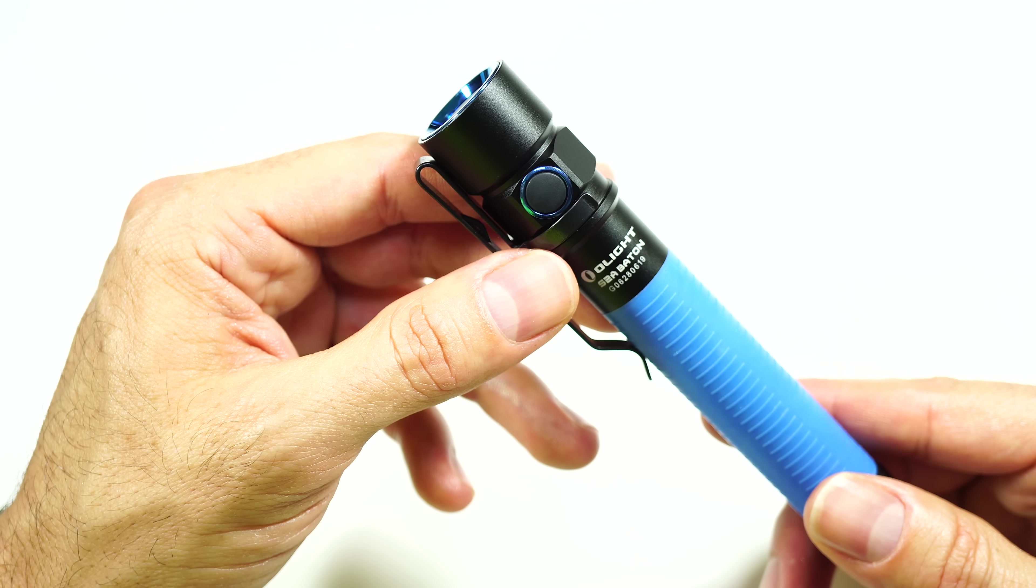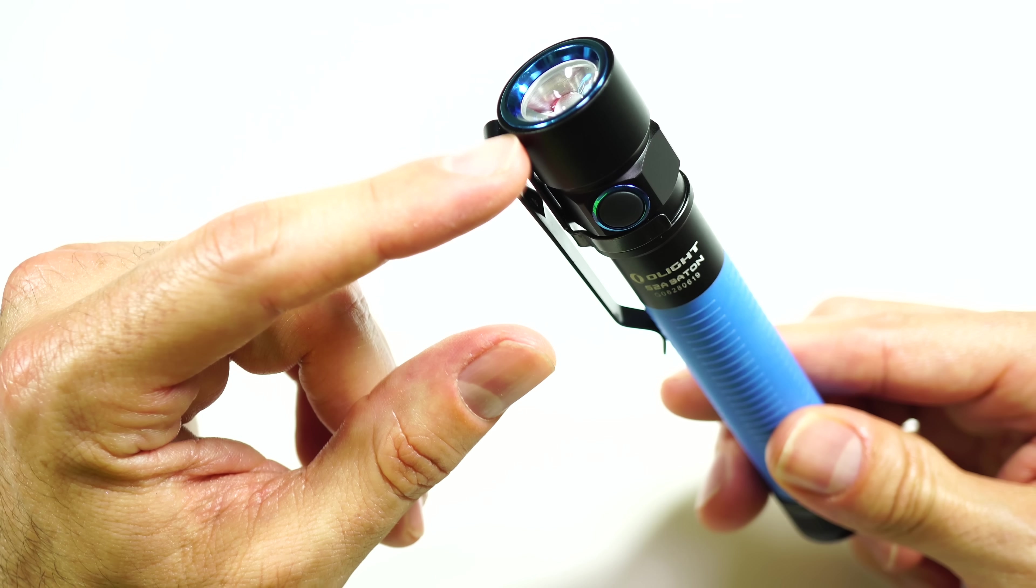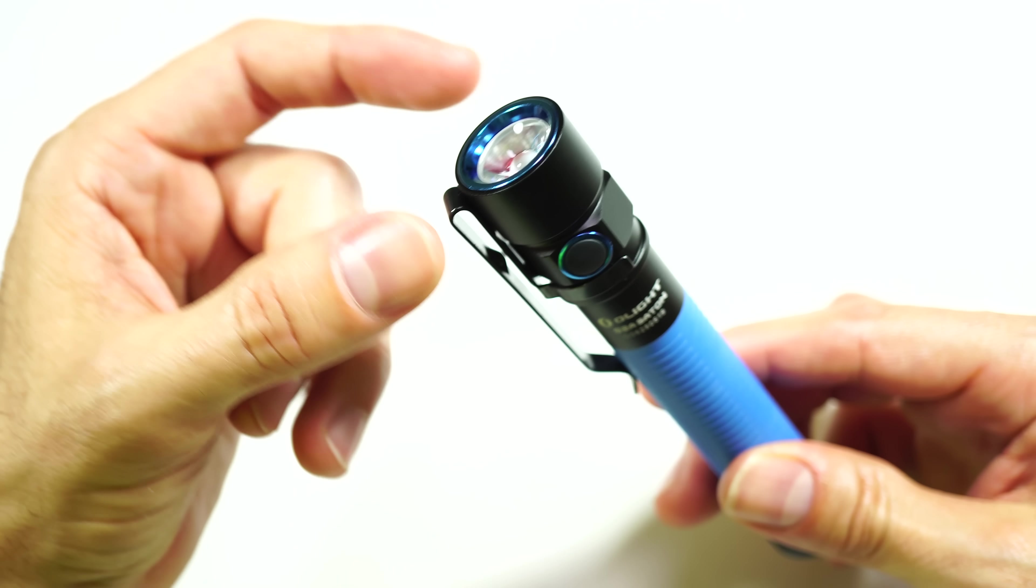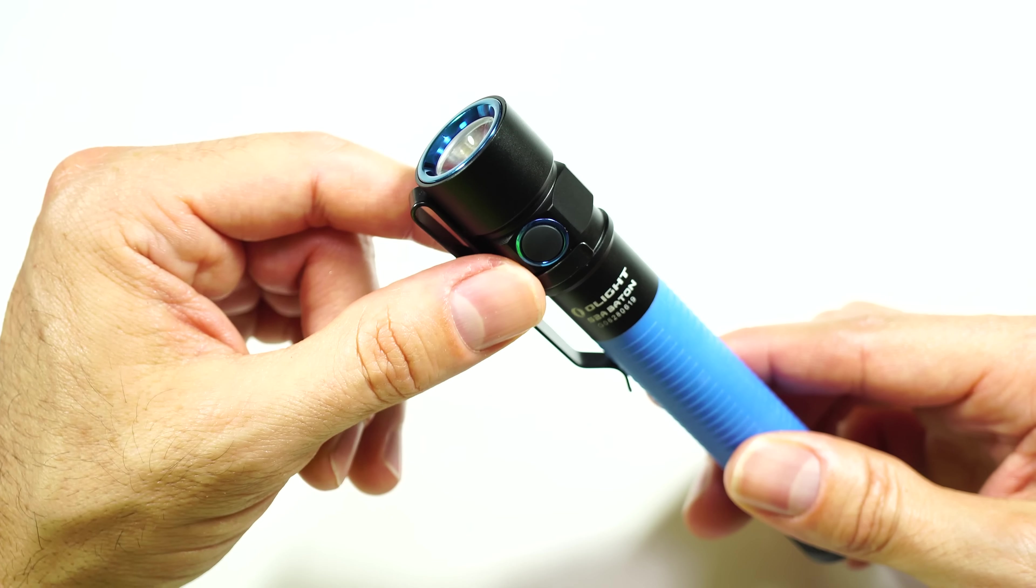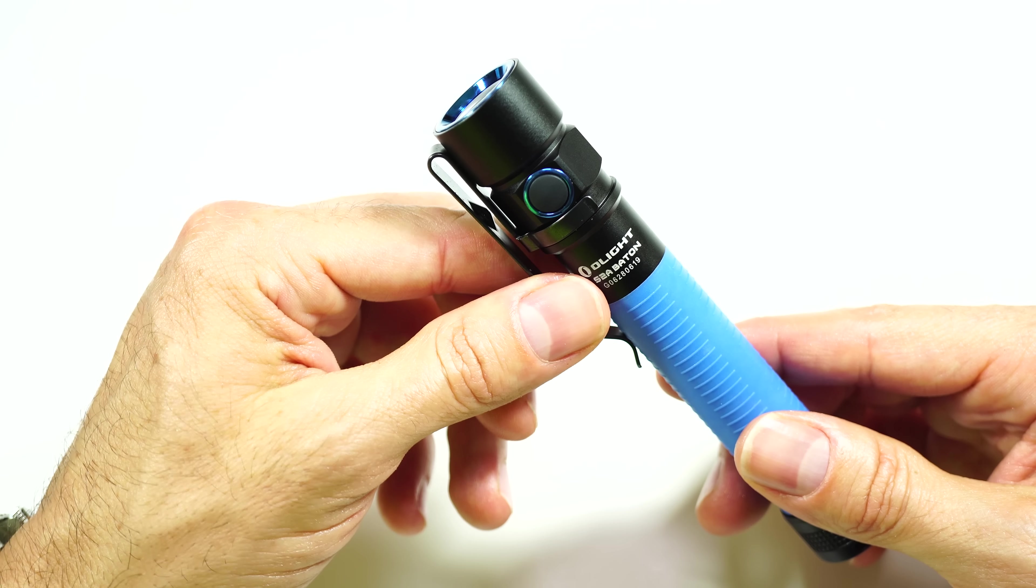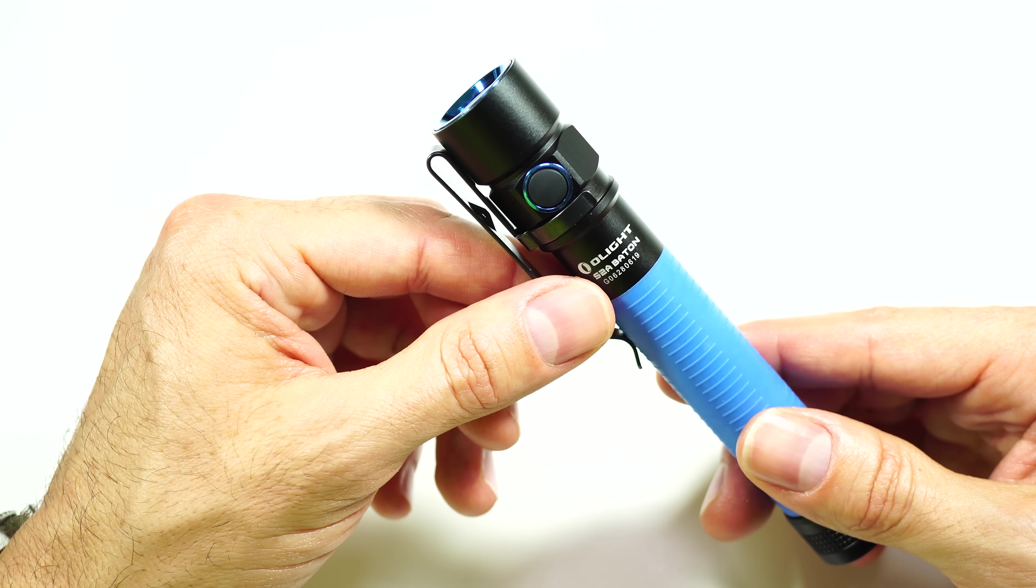The light does have thermoregulation, so when it is at the 550 lumens, it gets pretty warm, and to compensate for itself, internally it will bump itself down to 300 lumens after three minutes, so the light can cool down a little bit before you bump it back up to the 550 lumens if you need to.